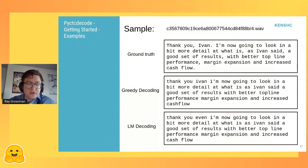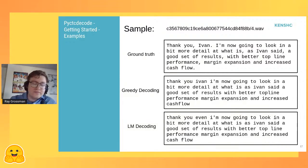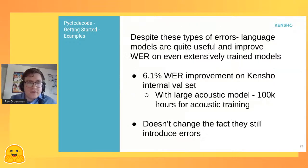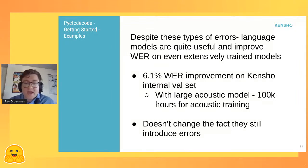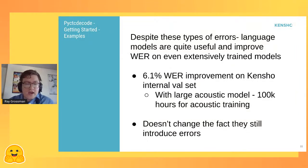Despite these types of errors, language models are still quite useful. On our internal validation set at Kensho, we get about a six percent improvement in word error rate simply from adding a language model — and this is with a very large acoustic model trained on almost 100,000 hours of audio. That's a strong endorsement that n-gram language models are very useful in almost any speech-to-text scenario. But that doesn't change the fact that it still introduces some errors.